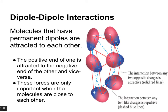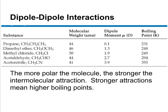Looking at this picture, the positive end of one molecule is attracted to the negative end of the next, which is attracted to the positive end of another, and so on — opposite charges attract. The more polar the molecule, the stronger that intermolecular attraction is going to be. The stronger the dipole-dipole interactions, the higher the boiling point. You can see in this chart that as the dipole strength increases going down the table, so does the boiling point — more energy is needed to overcome those dipole-dipole interactions.